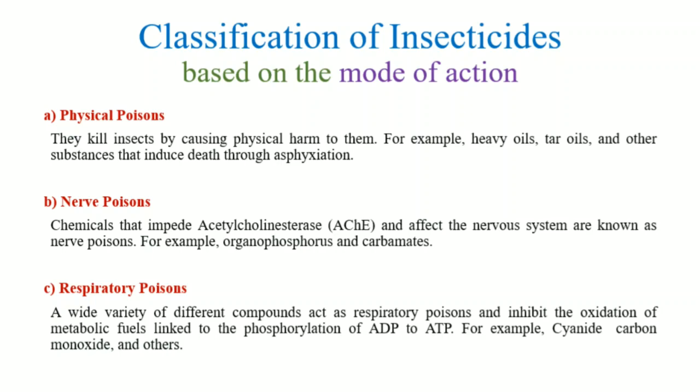Respiratory poisons halt the cellular respiration process by inhibiting the oxidation of metabolic fuels linked to the phosphorylation of ADP into ATP. Examples include cyanide and carbon monoxide.